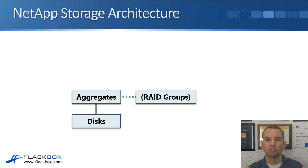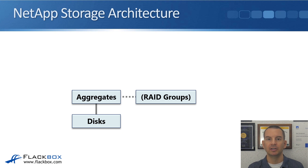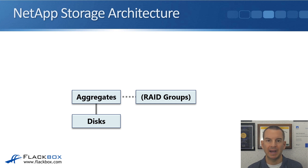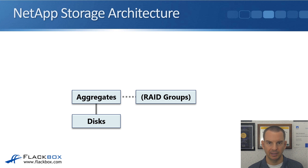The RAID group is an attribute of the aggregate. In the System Manager GUI there's a page for your disks where you can see all the individual disks in the system, and there's also a page for your aggregates where you can see what aggregates you've got and how they've been configured. There is not, however, a page for RAID groups — because the RAID group is an attribute of the aggregate. So on the aggregate page you'll see your aggregates and how the RAID groups are configured on them.